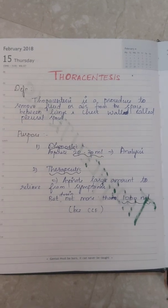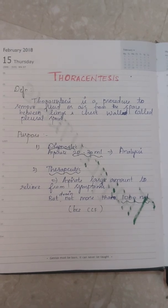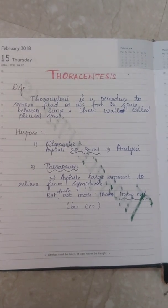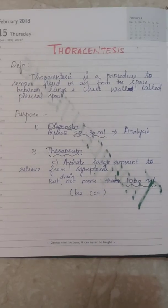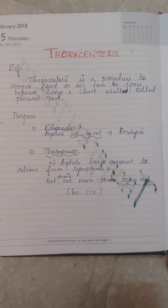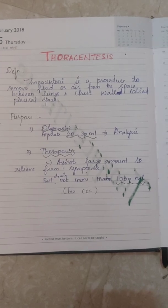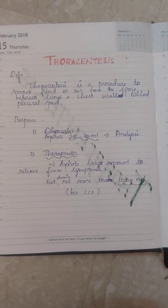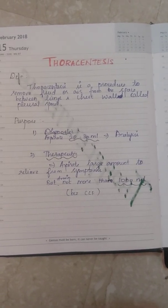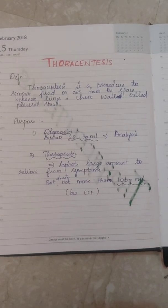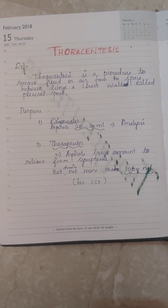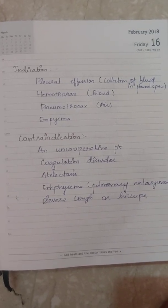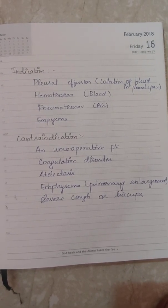The thoracentesis procedure has two purposes: diagnostic and therapeutic. For diagnostic purposes, a small amount — 20 to 30 ml — is aspirated. For therapeutic purposes, that is, treatment, a large amount of fluid is aspirated to relieve symptoms, but not more than 1000 ml, because removing more can cause cardiac failure.